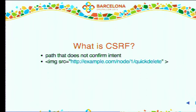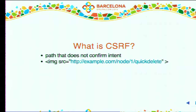Cross-site request forgery is an interesting one. Basically you have a path on your website that does not confirm the intent of the user. A typical attacker snippet uses the src attribute of an image tag pointing to an arbitrary URL — for example, a callback on your site that quickly deletes a node without confirmation. An attacker places that image somewhere, you're logged in as admin on your Drupal site, your browser tries to fetch the image while you're still authenticated, and suddenly your node is gone. That's basically how CSRF is exploited.